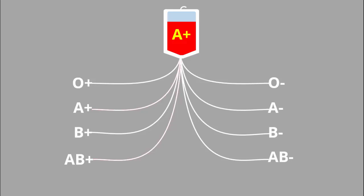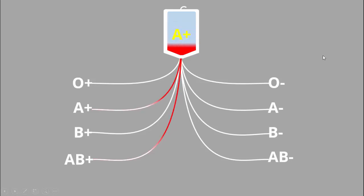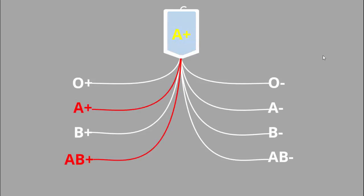In today's tutorial I am going to show you how to create a blood group compatible slide in PowerPoint. I have created this blood pouch which has 'A positive' written on it with some blood, and I've added different blood types. When I click, it will show you which blood group types a particular type is compatible with — for example, A positive is compatible with A positive and AB positive.